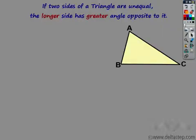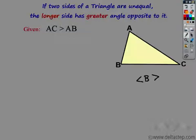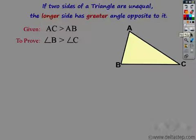To prove this, we need a triangle. So let's say we have triangle ABC. What we are given is that two sides of the triangle are unequal — specifically AB and AC. Let's say AB is less than AC, so AC is the longer side. What we want to prove is that the greater side has the greater angle opposite to it. Since AC is the greater side, the angle opposite to it is angle B, and since AB is the smaller side, the angle opposite to it is angle C. So we want to prove that angle B is greater than angle C.